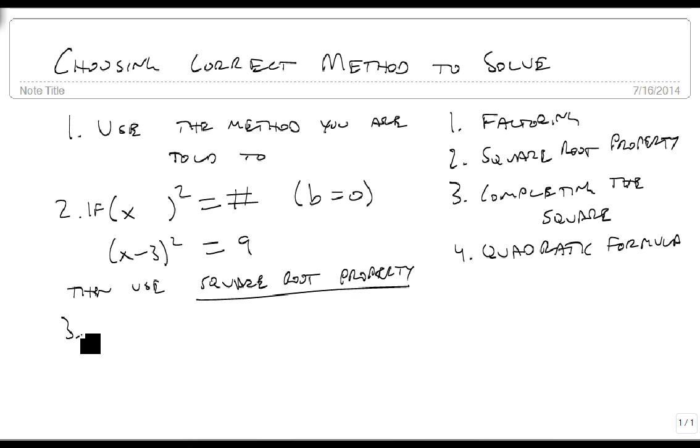If it's not, if you have a b that's not zero, then look to see if it factors. If you see the factors, if they just jump right out, you look at it and say, hey, this looks factorable, then factor.